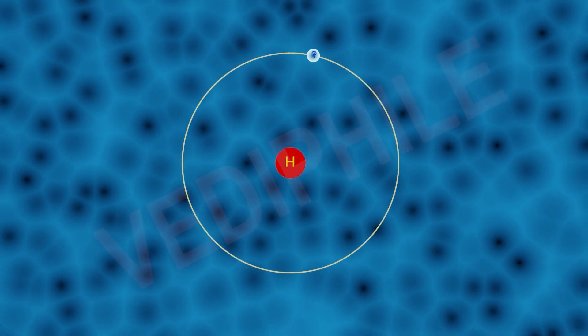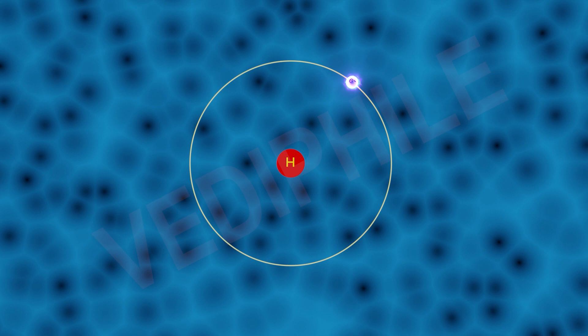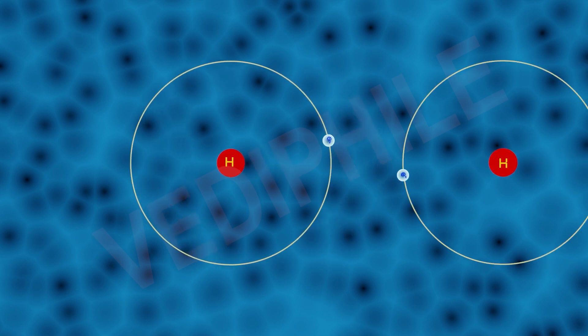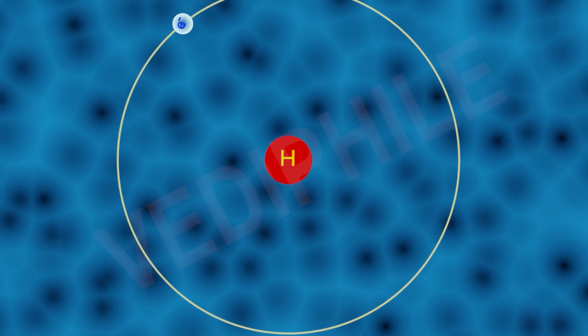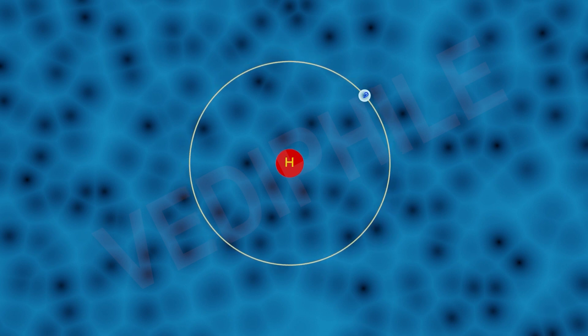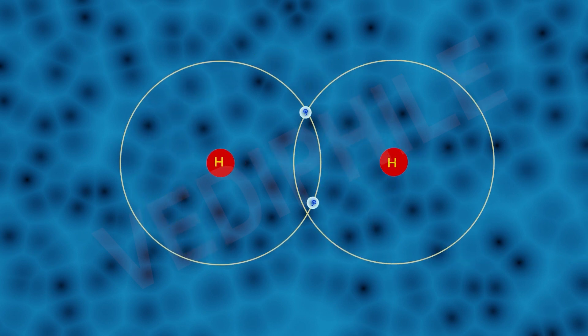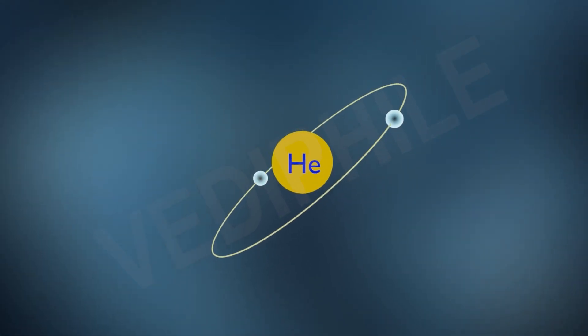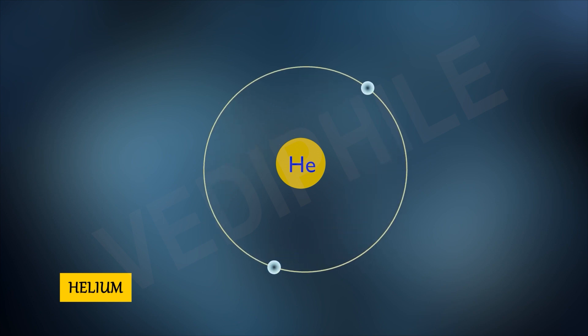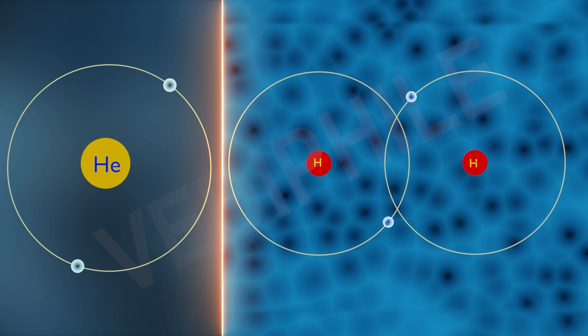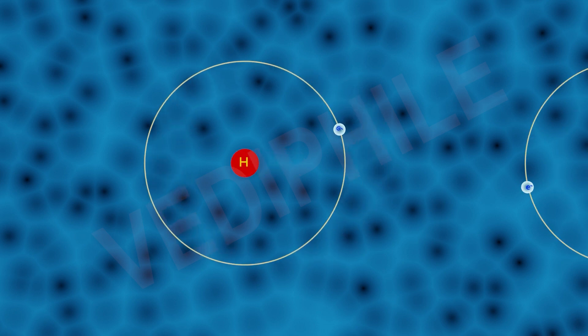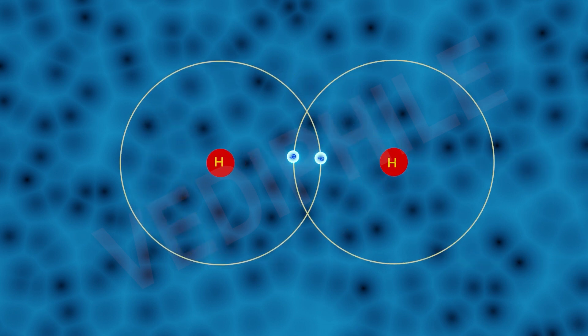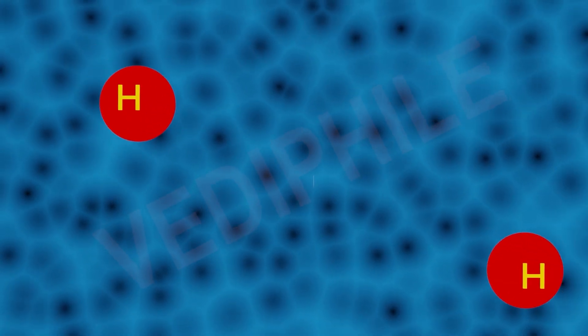The simplest molecule formed because of the covalent bond is hydrogen. The atomic number of hydrogen is 1. It has only one electron in its K shell, so it requires one more electron to fill the K shell. Two hydrogen atoms share their electrons to form a molecule of hydrogen. Hence H2 is formed. This allows each hydrogen atom to attain the electronic configuration of the nearest noble gas, that is helium, which has two electrons in its K shell. A single covalent bond has two shared electrons and this is indicated by a solid line between two atoms.